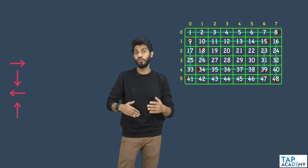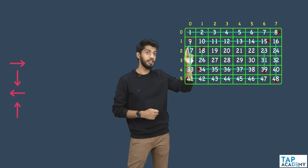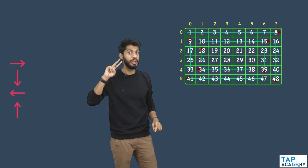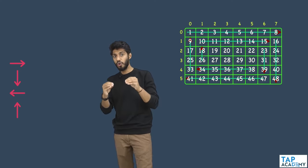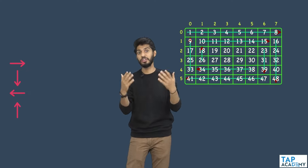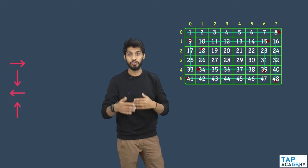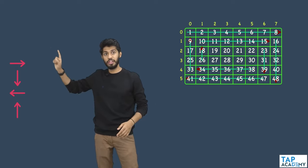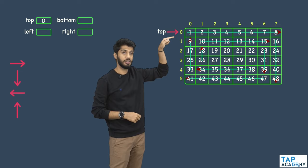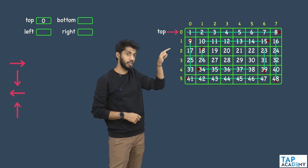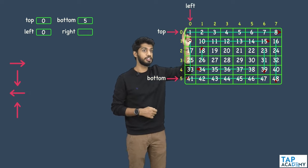To write code for this, we need four variables: top, bottom, left, and right. At the start, top points to row 0, bottom points to the last row, left points to column 0, and right points to the last column index.